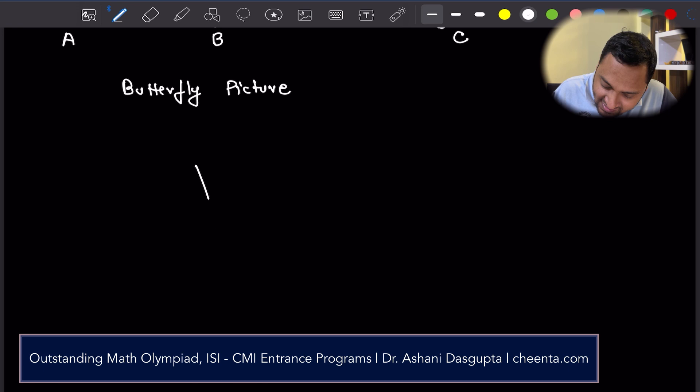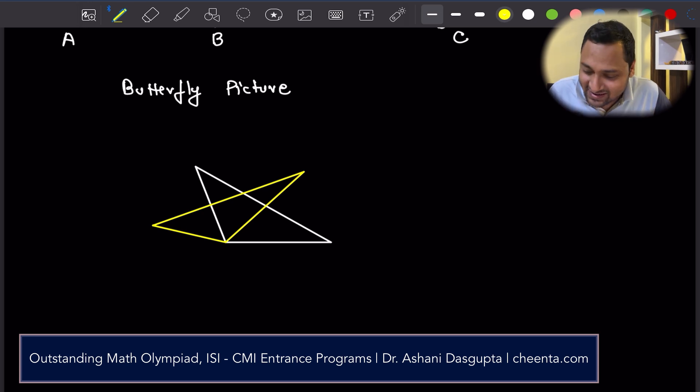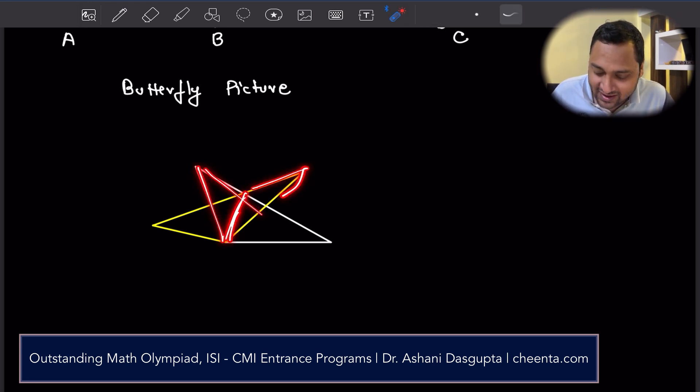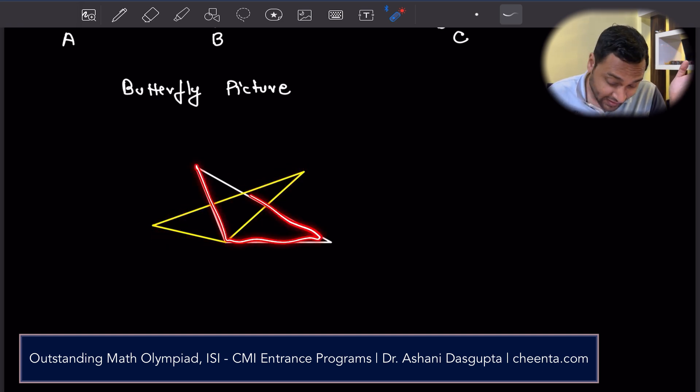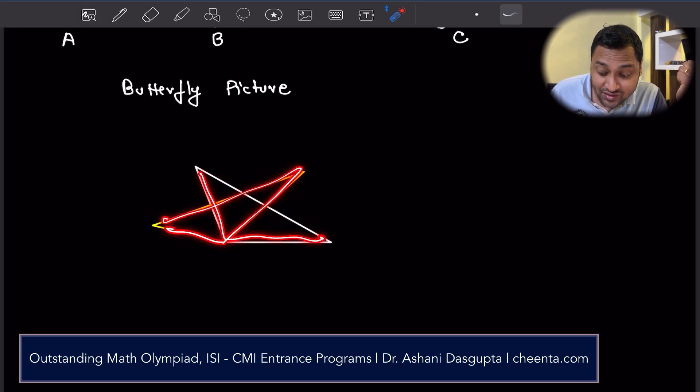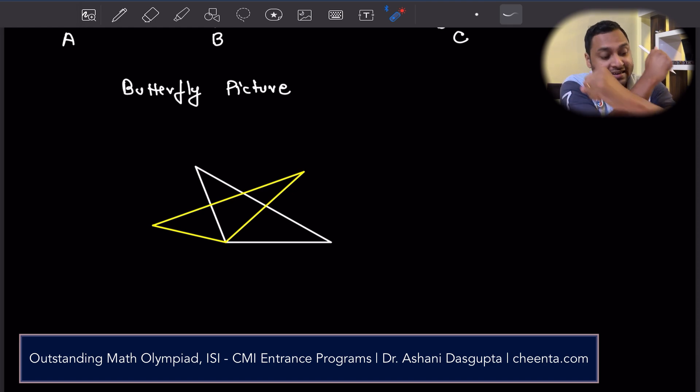Butterfly picture. So the butterfly picture is like this. You have something like this. [draws diagram] So you can imagine that there is a sort of a butterfly in this particular picture and these are the wings of the butterfly. It's just an imaginative way of talking about this sort of arrangement. Let's come back to this picture quickly.